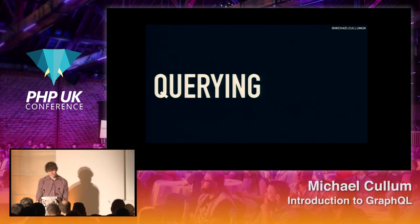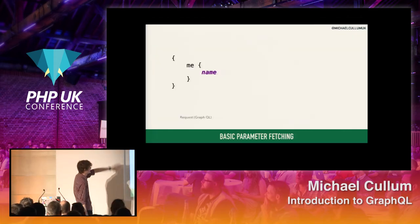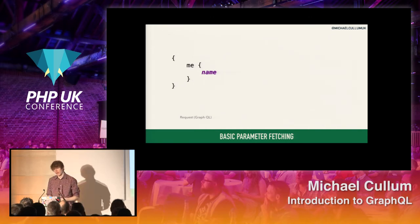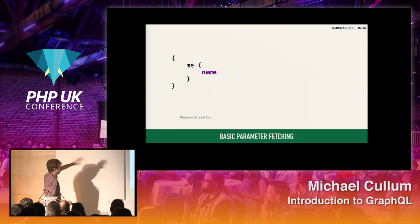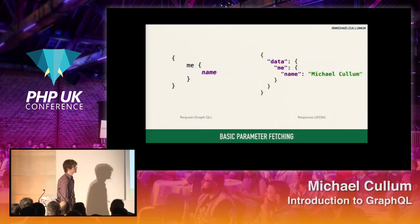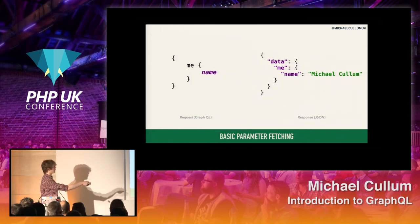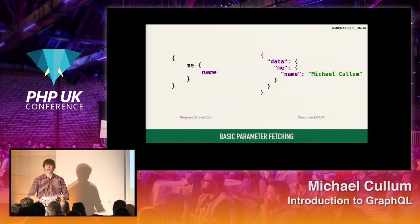Let's have a look at starting to query this. This is something in GraphQL — this is a request. What I'm saying is on the 'me' object I want to get the property 'name'. I want to get my name. It is just this simple. This is the most bare-bones sort of thing you can do — getting a property off of an object. And this is what it returns: it returns my name, Michael Cullum. It returns it in exactly the same format that I requested it in, and it only returns me the fields that I specifically asked for.